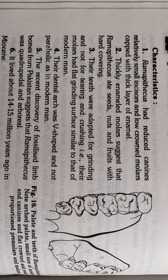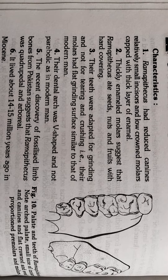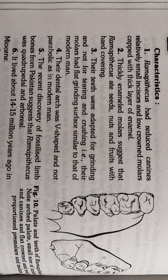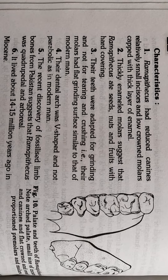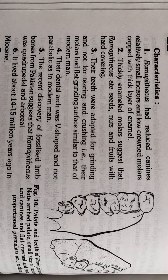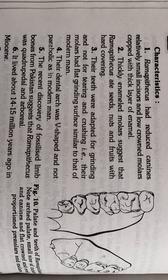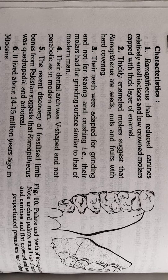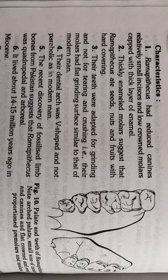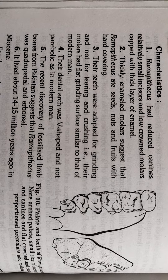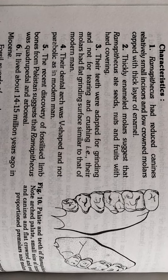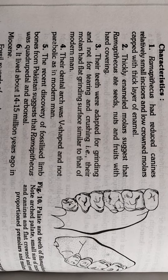Hello, welcome back to DNA by Science. Today's topic is about the Ramapithecus and its characteristics. As you can see in this picture, it shows the palate and the teeth structure of Ramapithecus. The first point is it had reduced canines, relatively small incisors, and low-crowned molars kept with a thick layer of enamel.